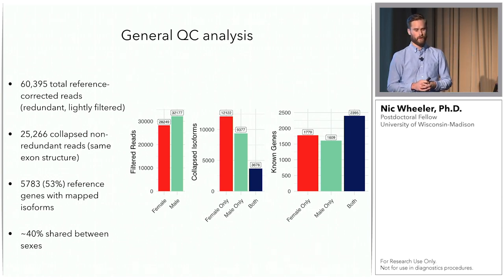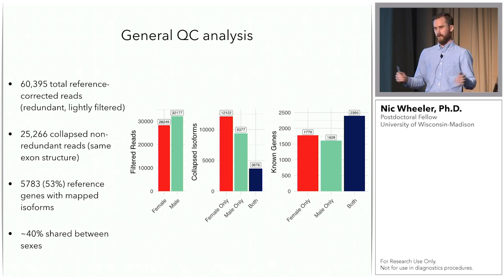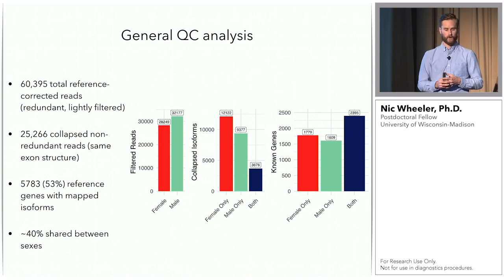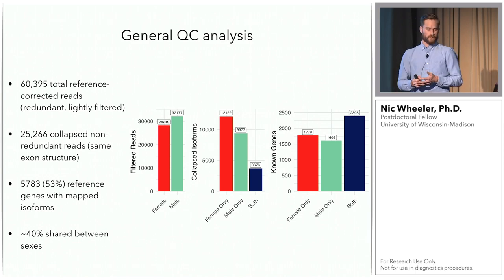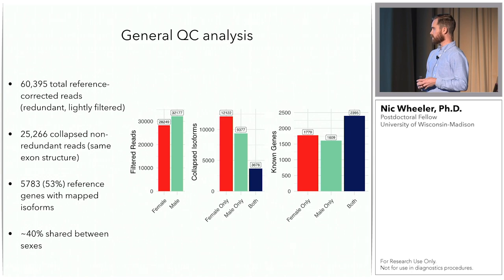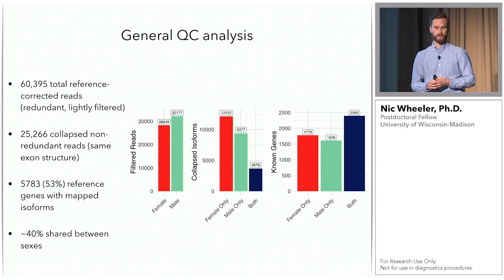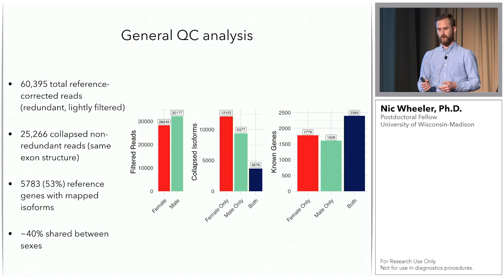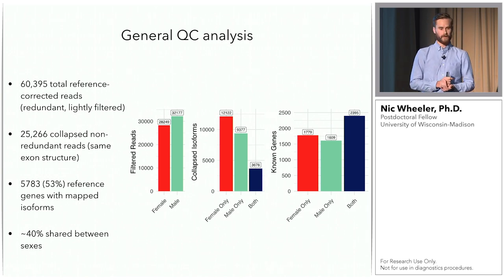I'll talk about some general QC of the dataset and then how I used it to look at particular receptors. In all, we had over 60,000 total reference-corrected reads. Once collapsed by exon structure, we had about 25,000, covering about 53% of the transcriptome. About 40% of those were shared between sexes. We didn't get as much coverage as we would have liked, but we did see some good discrepancy between males and females. IsoSeq data quality is only as good as the mRNA you put in, and with these worms it was really hard to get full-length mRNA — we had to sacrifice a number of gerbils to get enough worm tissue.